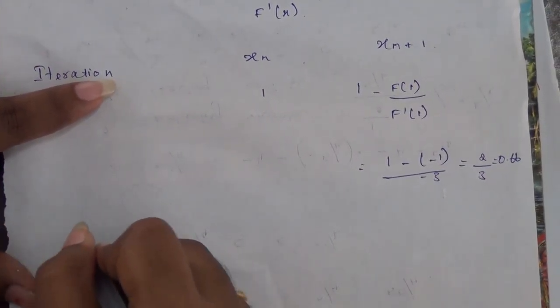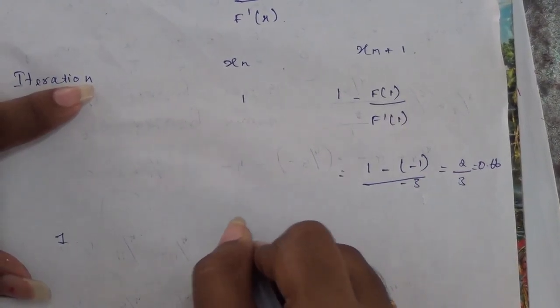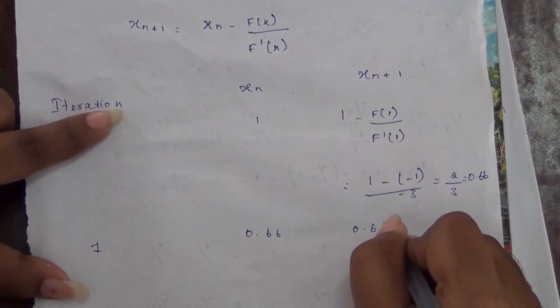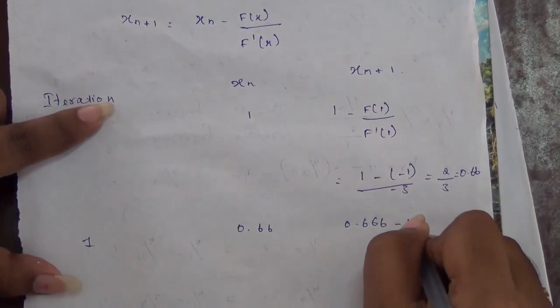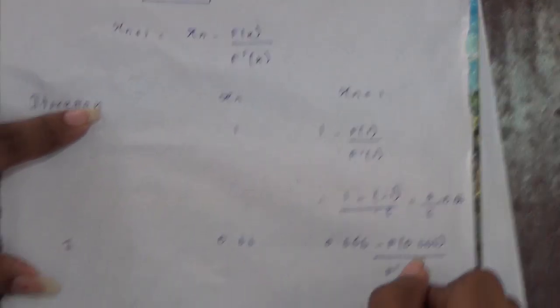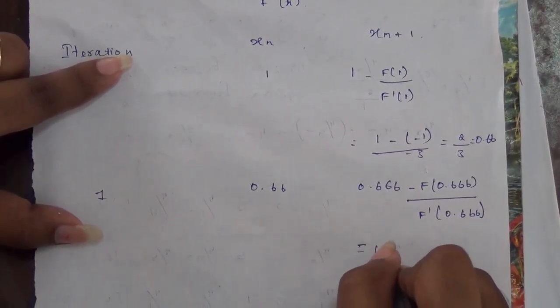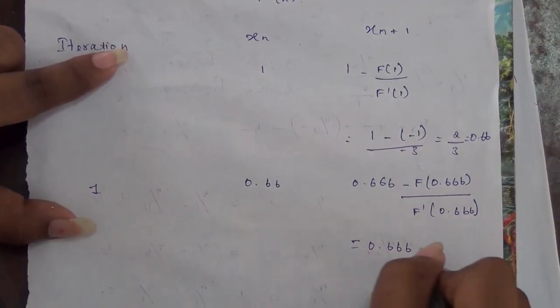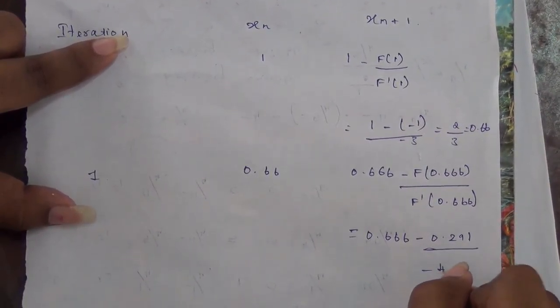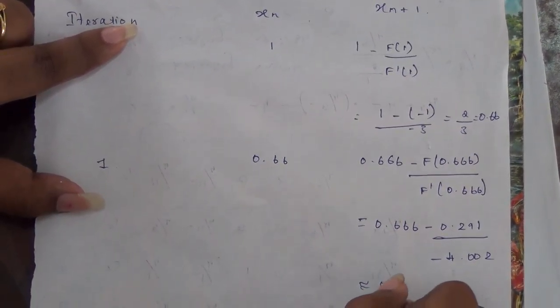In the next iteration where the iteration number is 1, x_n = 0.66. We substitute in the equation: 0.666 - f(0.666)/f'(0.666). So when the values are substituted, we get 0.666 - 0.291/(-4.002), which is approximately equal to 0.73.